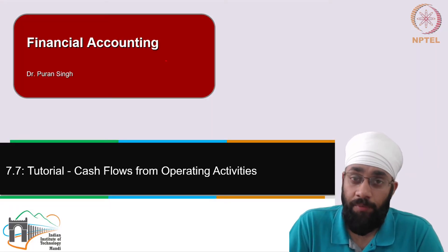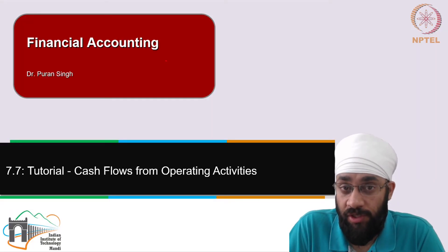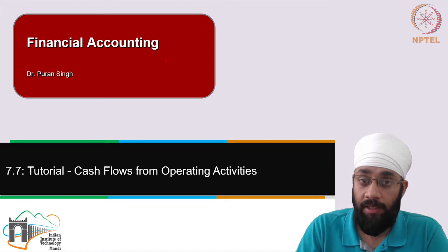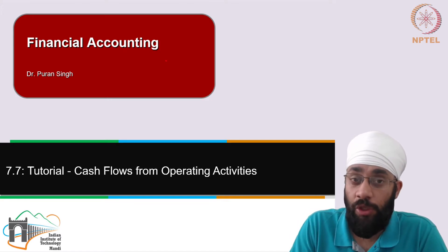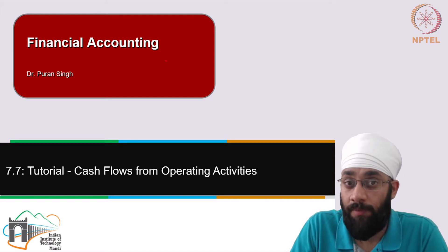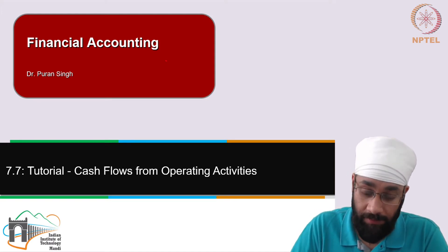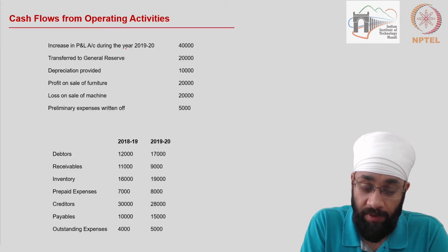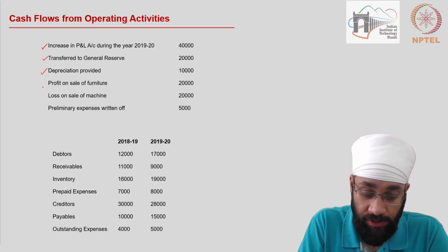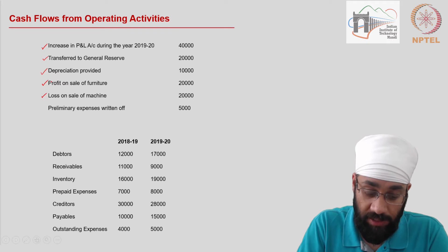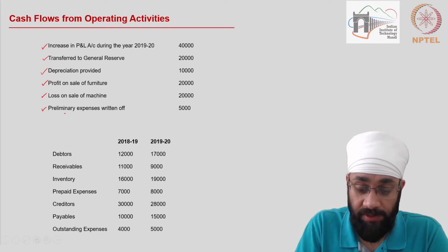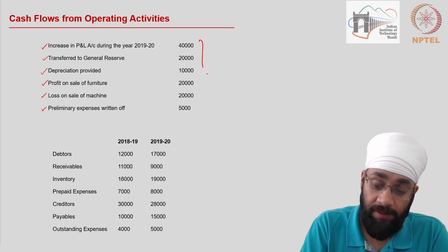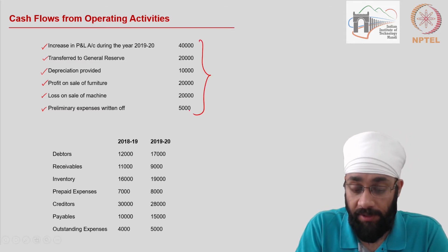In this tutorial we are going to learn to prepare the first section of the cash flow statement. We will take some data and try to repeat the process used to calculate cash flows from the operating activities of the business. On the slide you can see some details: increase in profit and loss account during a financial year, transfer to general reserve, depreciation, profit on sale of fixed asset, furniture, and loss on sale of a fixed asset. We also have preliminary expenses written off.